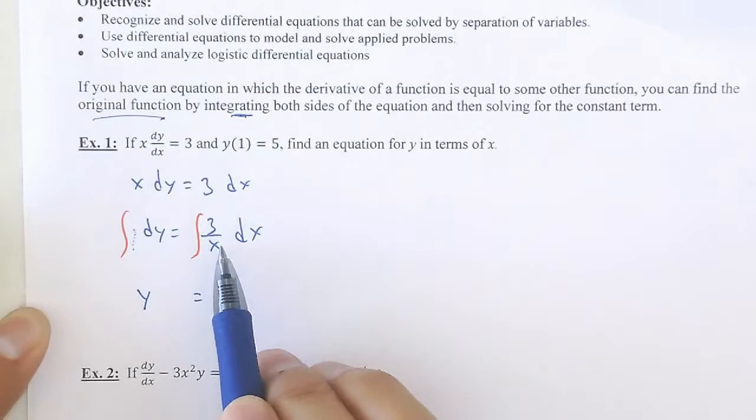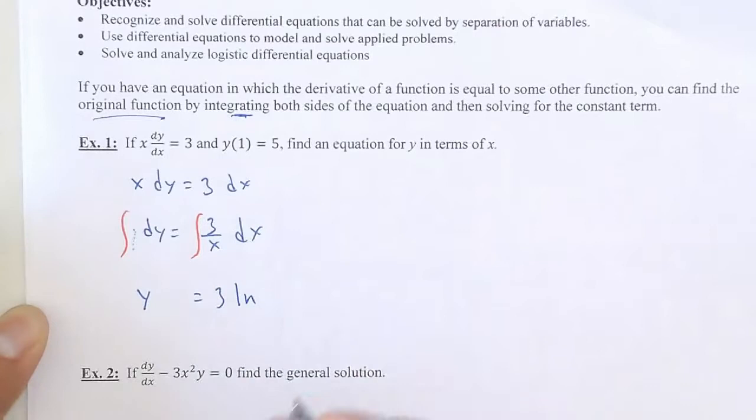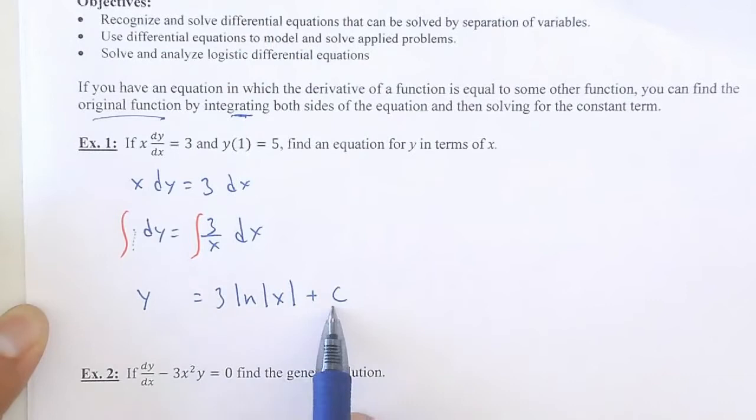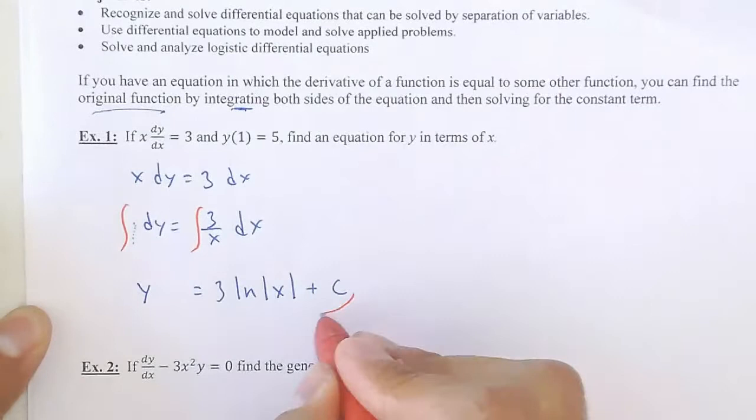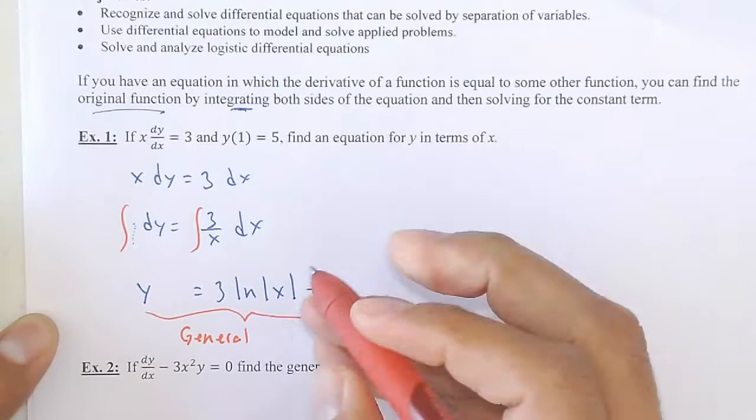I see the variable in the denominator, which tells me this is a natural log — absolute value of x — plus that constant c. I do have a constant on this side that I'm not writing because I'm going to move it over there. That is what we call the general solution. That's not what we're looking for in this problem, but sometimes we do ask for the general solution, so let's continue.